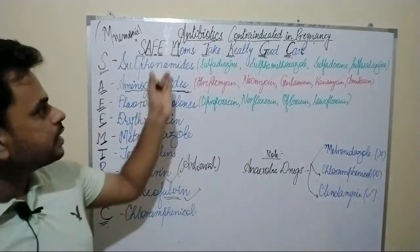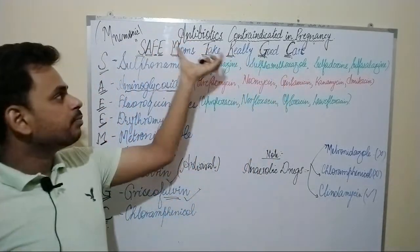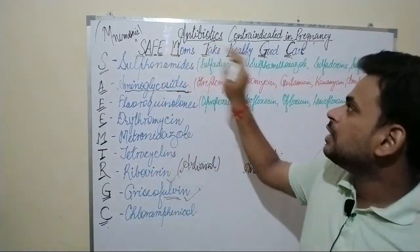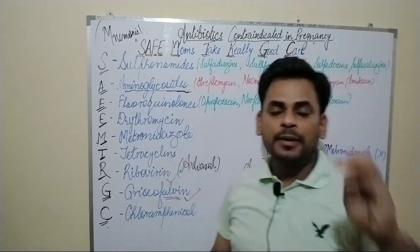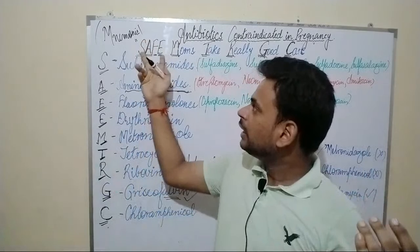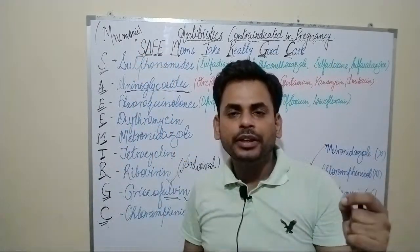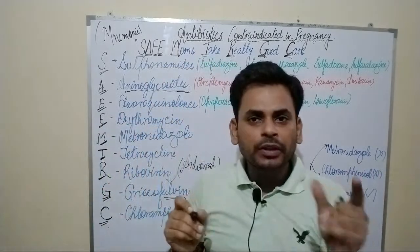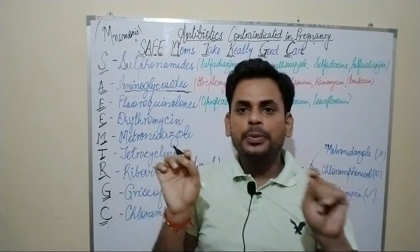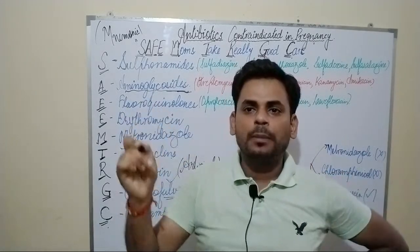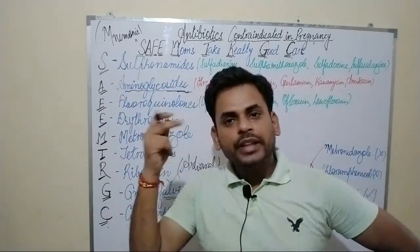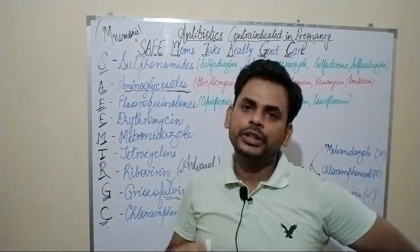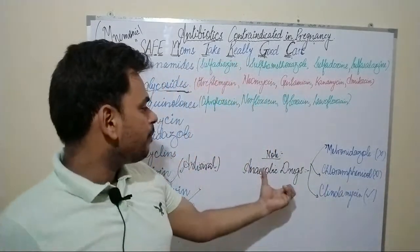So students, this was the mnemonic 'safe moms take really good care.' Just by remembering the initials — S of safe, M of moms, T of take, R of really, G of good, and C of care — along with all the alphabets of SAFE, we can very easily remember the drugs contraindicated in pregnancy. This is especially useful for PG entrance exams where you need to select which drug is contraindicated from the given options.